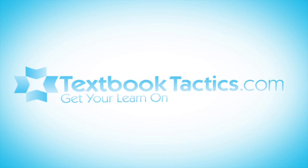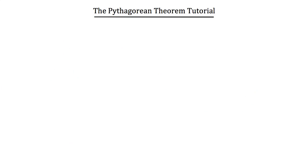This is the Pythagorean Theorem Tutorial. The Pythagorean Theorem is stated as a squared plus b squared is equal to c squared.